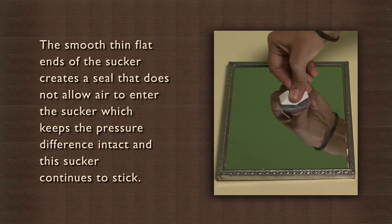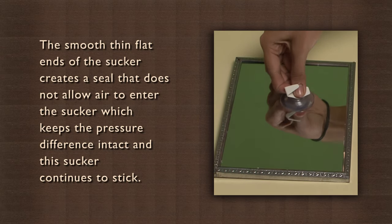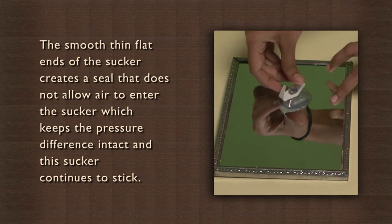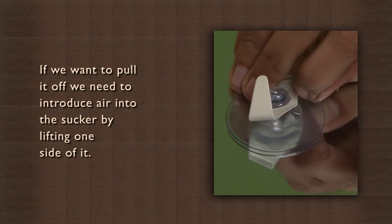The smooth thin flat ends of the sucker creates a seal that does not allow air to enter the sucker, which keeps the pressure difference intact and the sucker continues to stick. If we want to pull it off, we need to introduce air into the sucker by lifting one side of it.